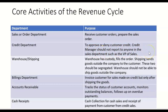Then the credit department — very important — to approve or deny customer credit. The credit manager should not report to anyone in the sales department, such as the VP of sales, because the VP of sales could put undue pressure on the credit manager to relax the credit to increase sales. The credit manager should report to someone like the treasurer.